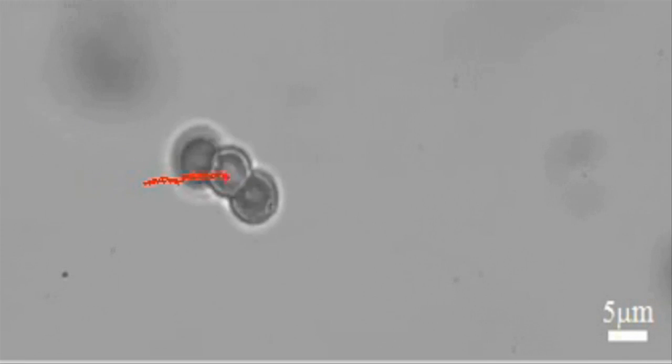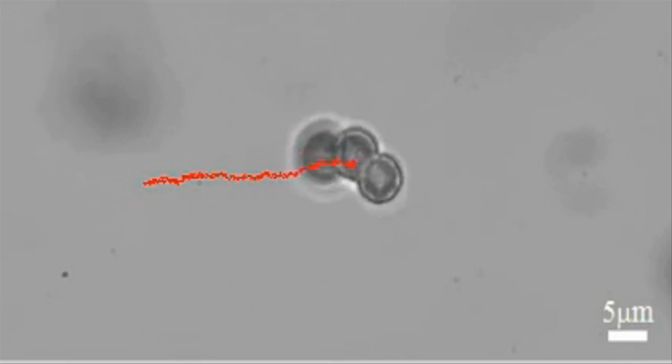The beads are put in motion by an external magnetic field that causes each of them to rotate. Because they are linked together, their individual rotations cause the chain to twist like a corkscrew, and this movement propels the microswimmer.